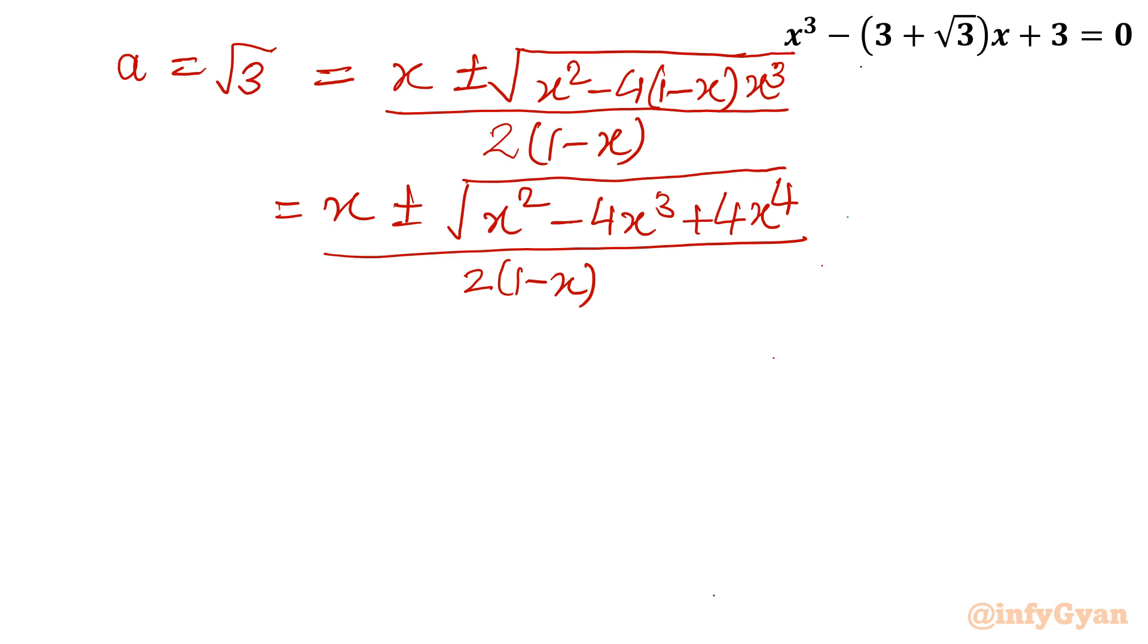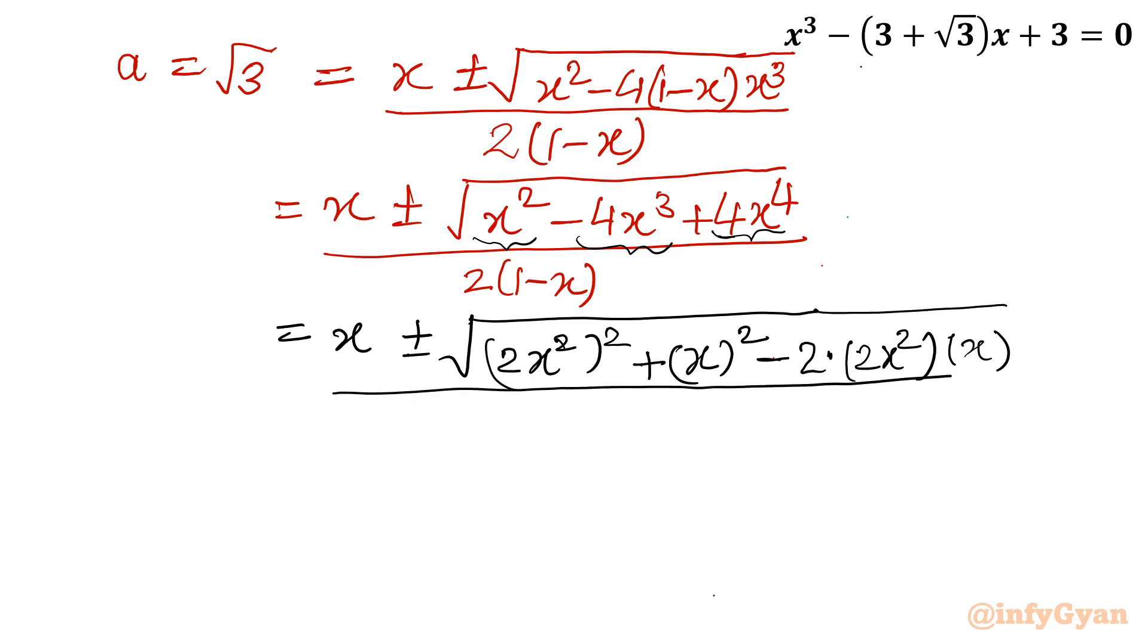Next step. It is one algebraic formula. See how it is: x ± √((2x²)² + (x)² - 2(2x²)(x)) / 2(1-x). I can write this as (2x²)² + x² - 2(2x²)(x). This is one algebraic expansion.